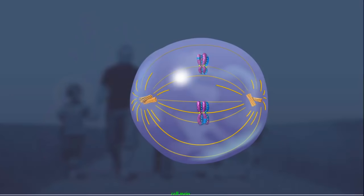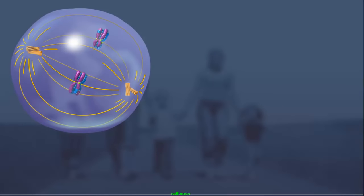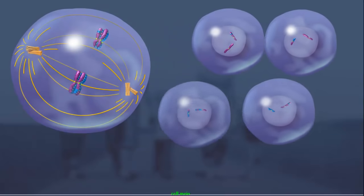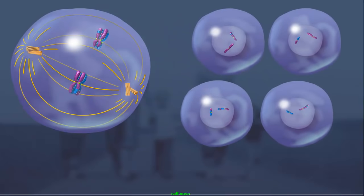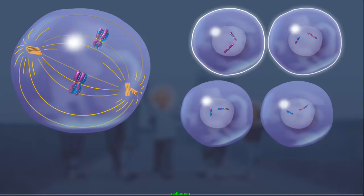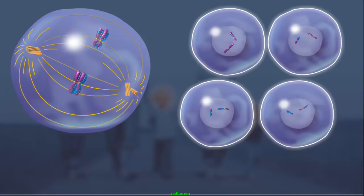In addition to crossing over, in metaphase I, the pairs of homologous chromosomes align independently along the metaphase plate and sort independently into the daughter cells. This process, called independent assortment, produces four genetically distinct haploid gametes.